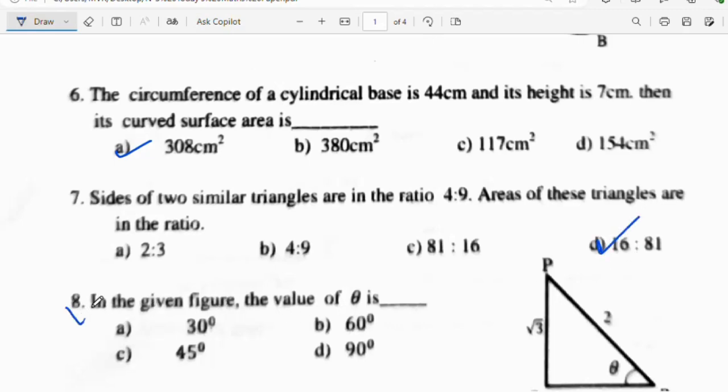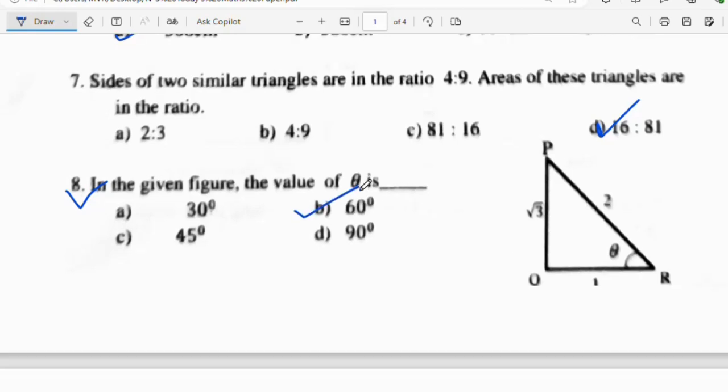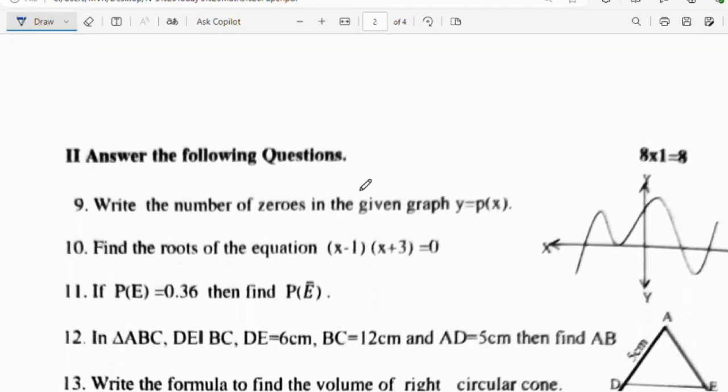Question number 8: In the given figure, the value of theta is dash. We have to find out the value of theta. If you take sin theta, sin theta is opposite by hypotenuse. We get 60 degree. The theta value is 60 degree, the right answer.